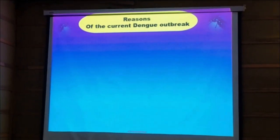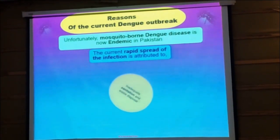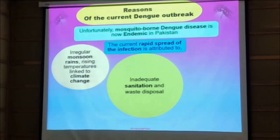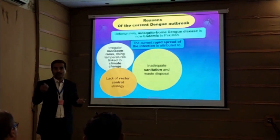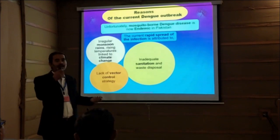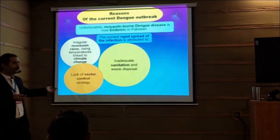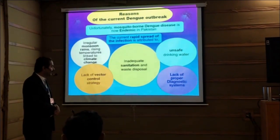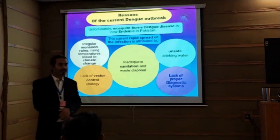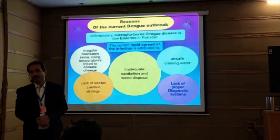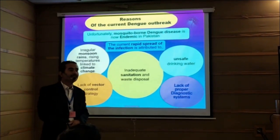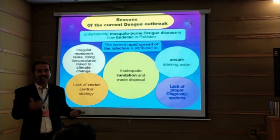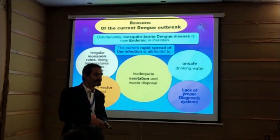What are the reasons for this current outbreak? The rapid spread is due to inadequate sanitation and waste disposal, irregular monsoon rains, rising temperatures linked to climate change, and also lack of vector control — there is no proper strategy to control the vector. Unsafe drinking water and lack of a proper diagnosis system is a big problem. In villages and remote areas, there is no proper diagnosis system. Even doctors mostly prescribe medicine without any test — whether it is a viral or parasitic infection, doctors just prescribe antibiotics — and that is the reason most vectors have become resistant against antibiotics.